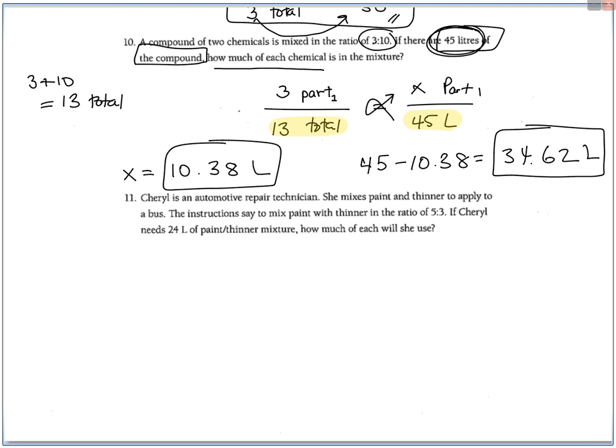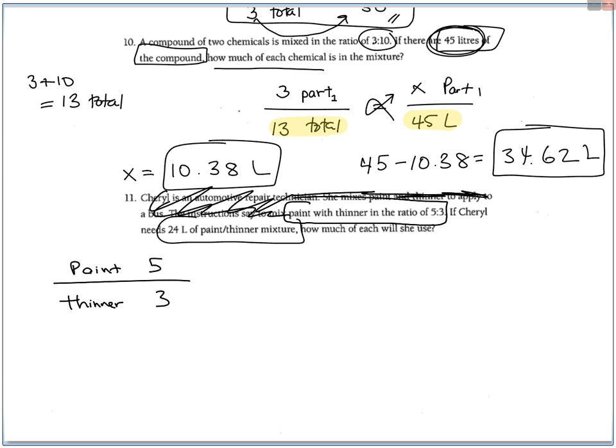The next one is about an automotive repair technician who paints. The instructions say to mix paint with thinner. So there's my ratio. I always just highlight the important stuff. And like this other stuff, it doesn't even matter. So paint is 5, thinner is 3. If Cheryl needs 24 liters of the paint thinner mixture, that's a total, how much of each do you use? So again, I have to add those two up for 8. So paint being 5, total being 8.